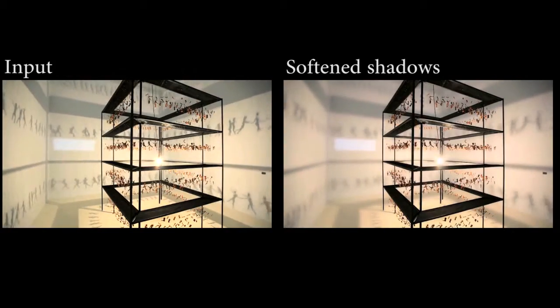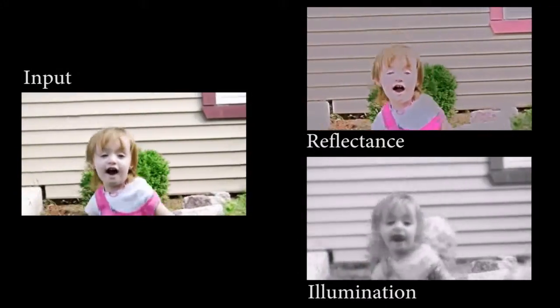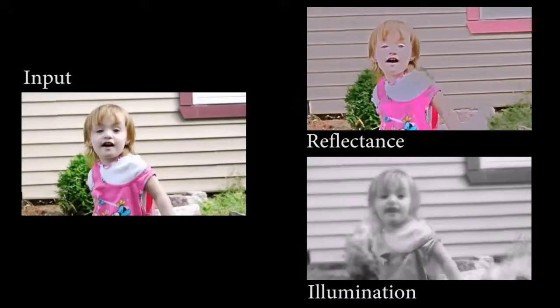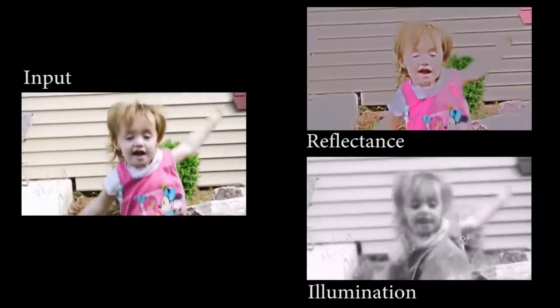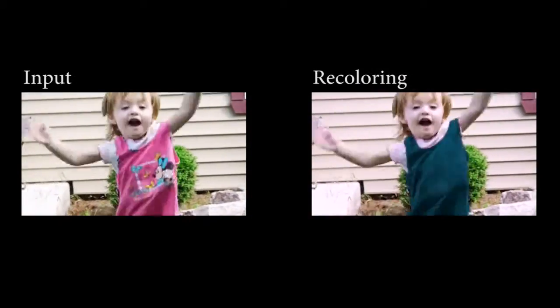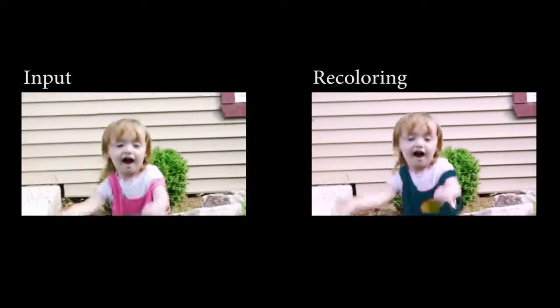With complex reflectance patterns such as the character design on this shirt, intrinsic decompositions often need user input to correct ambiguities. Our solver makes this process fast as users receive instant feedback.